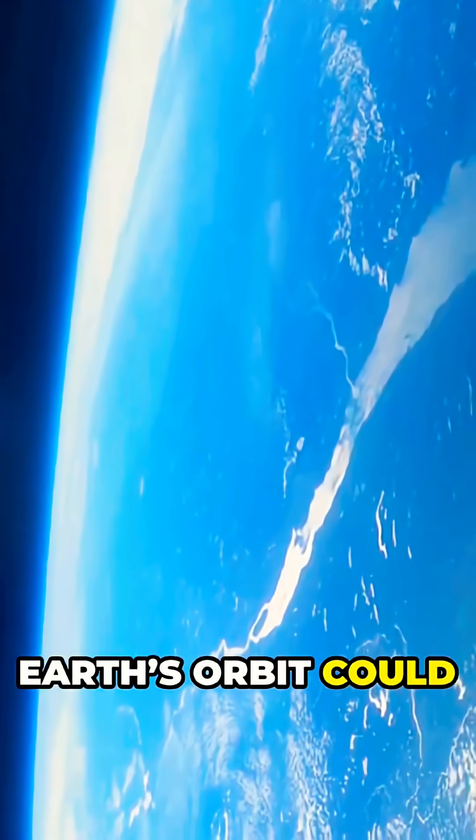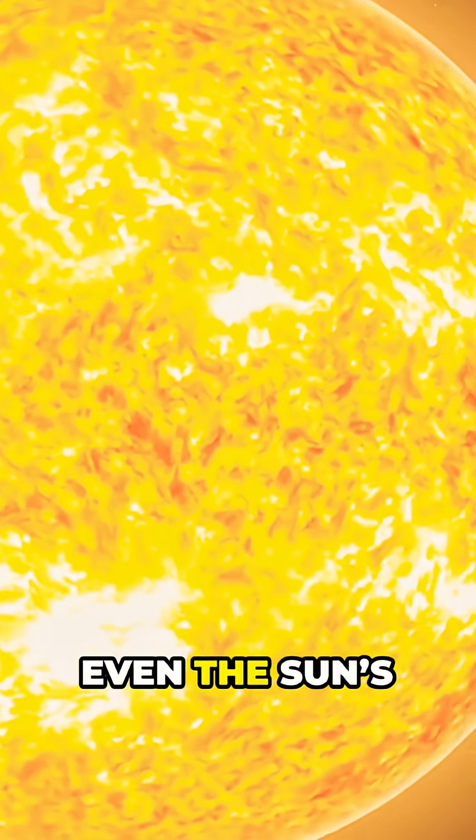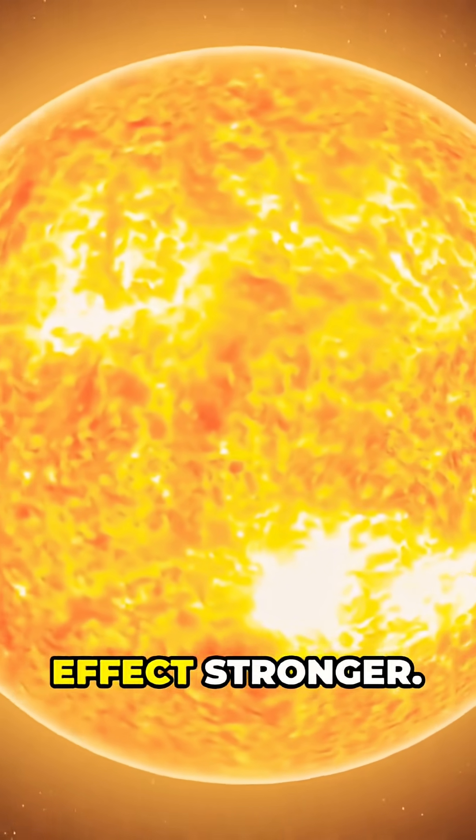Over very long timescales, Earth's orbit could slowly drift outward. Even the Sun's gradual mass loss would make this effect stronger.